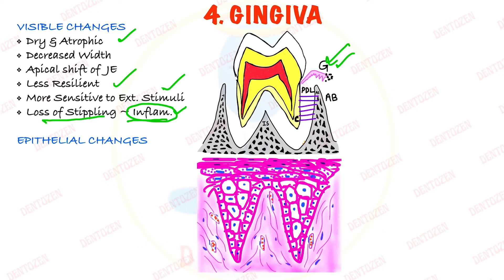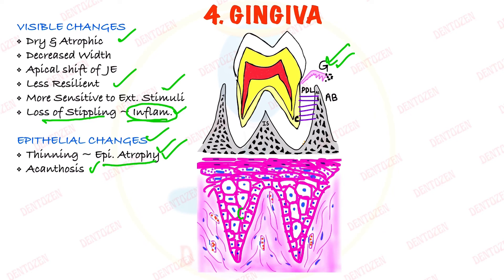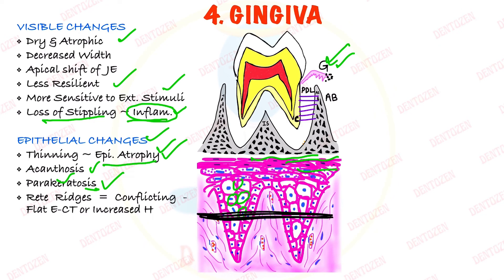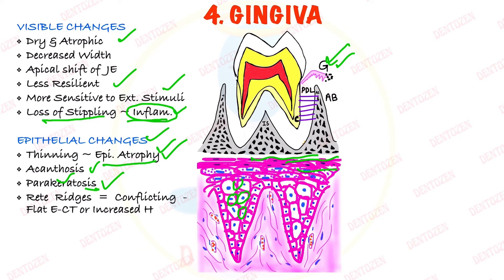In the histology, changes seen in the epithelium include: thinning of the epithelium, so epithelial atrophy occurs; acanthosis, which is an increase in the number of prickle cell layers; and parakeratosis, where the parakeratin layer increases in thickness. Regarding the rete ridges — epithelial projections of the gingival epithelium — there are conflicting reports: some studies say the junction between epithelium and connective tissue becomes flat with no ridges, while others say the height of epithelial ridges increases.